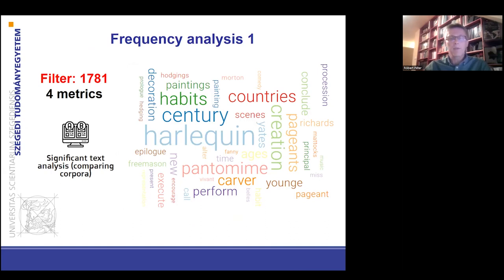This function enables users to compare a subcorpus — a filtered subgroup of the dataset — with the entire corpus. It identifies the significant and unique characteristic words of a subcorpus compared to the entire corpus. I filtered the newspaper articles to the year 1781. On the word cloud, you can see the unique words characteristic of the articles published in this year. There are words such as perform, pantomime, decoration, theater, scenes, epilogue and prologue. We can easily conclude that many of these words are concerned with theater, so we can assume that something related to theater took place in 1781.